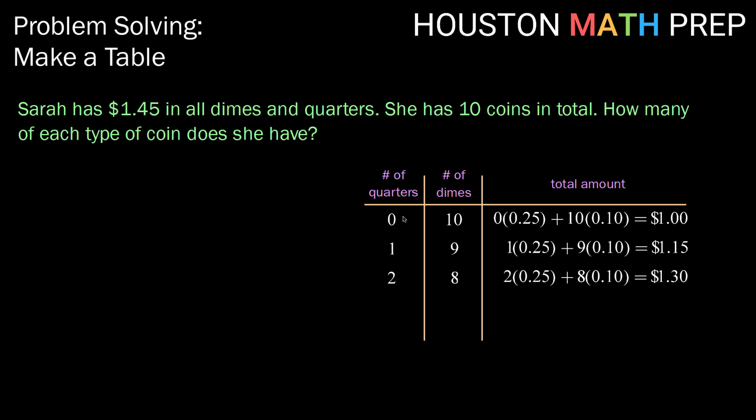So far, at least, as we change the number of quarters and dimes, we seem to be increasing our total amount by 15 cents. Let's see if that pattern holds.